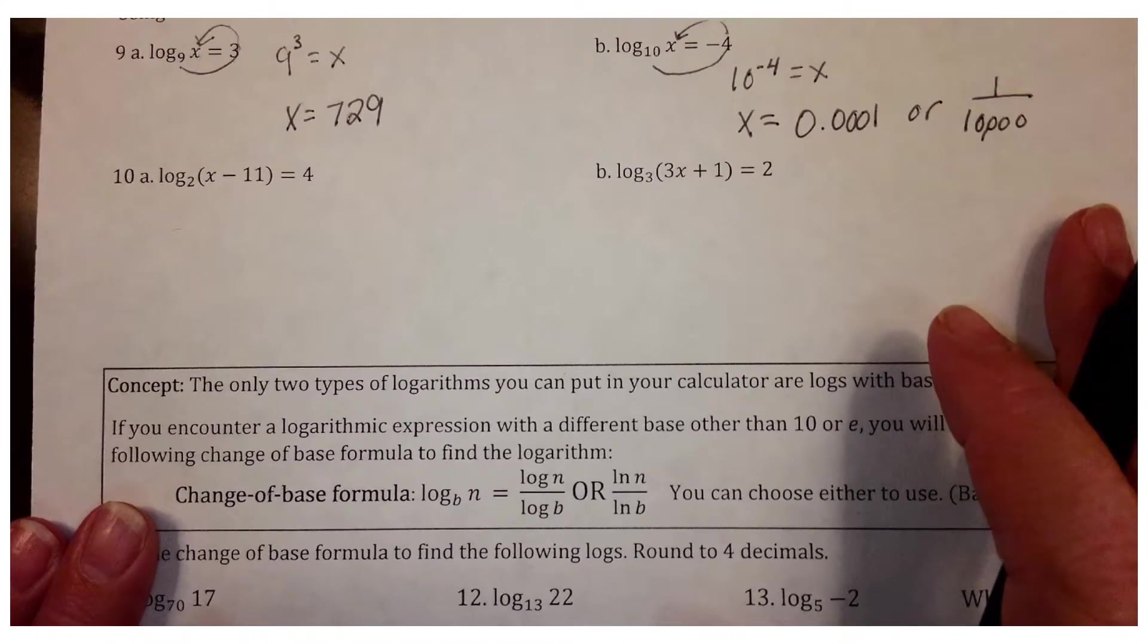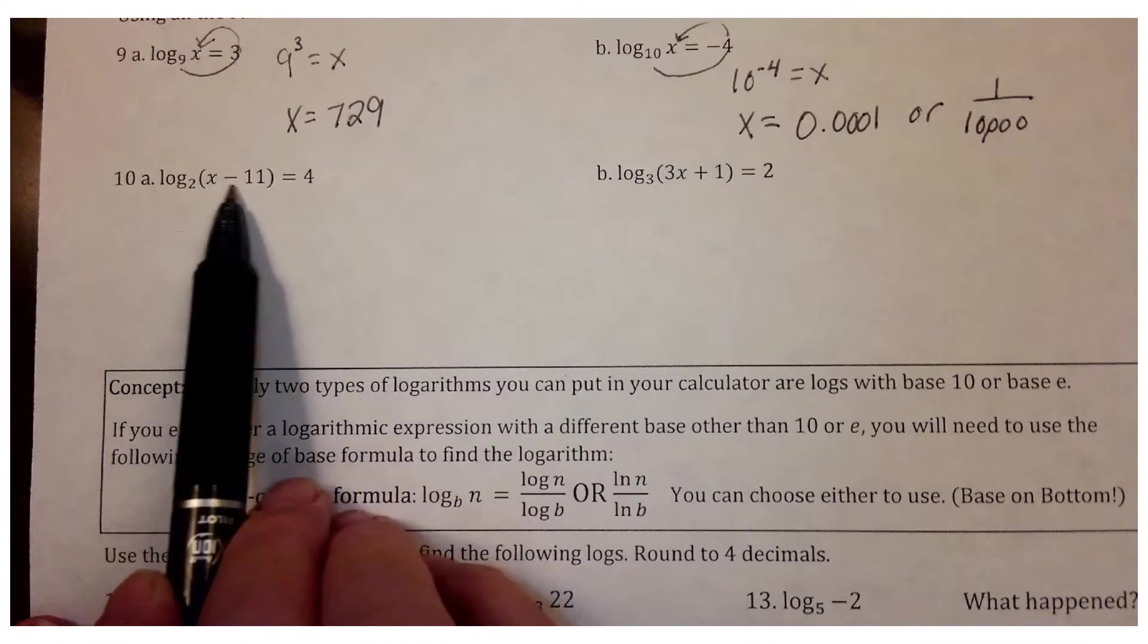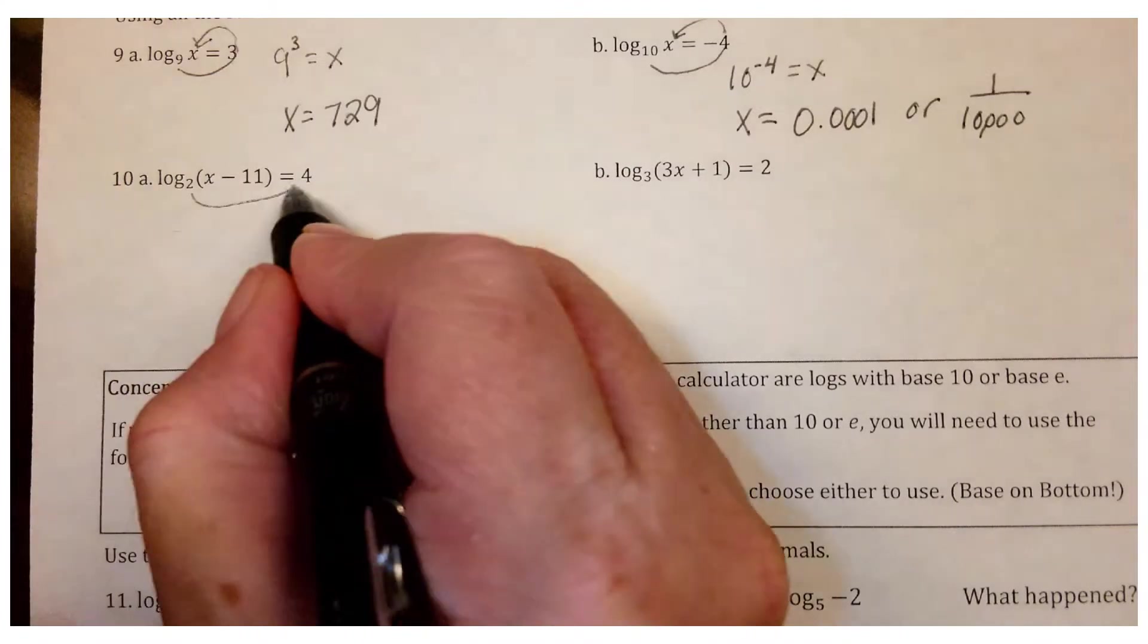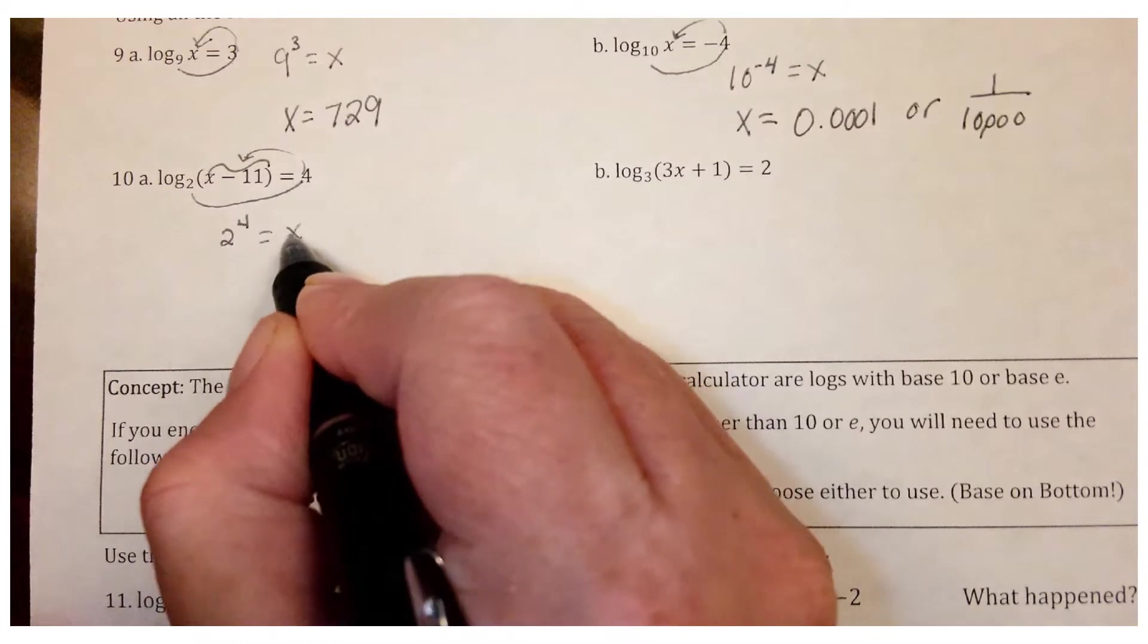Let's look at 10a. So we've got a little bit of an algebraic expression right here, but we can still work this the same way. So this is 2 to the 4th. And now it's going to equal all of this x minus 11.